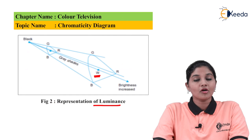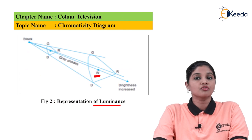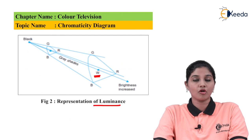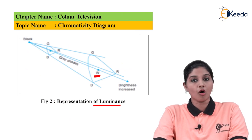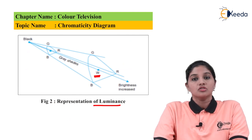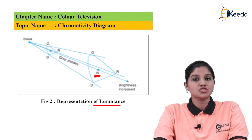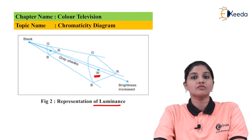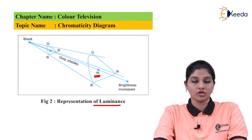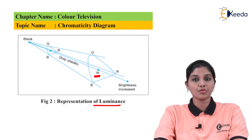The chromaticity diagram is used for obtaining the value of additive mixing without actually performing the mixing of colors. With the help of this diagram it is possible to obtain the result without performing additive mixing. I hope you understand this topic of chromaticity used in color television for producing light as well as various colors and mixtures of colors. Thank you very much for watching this video.